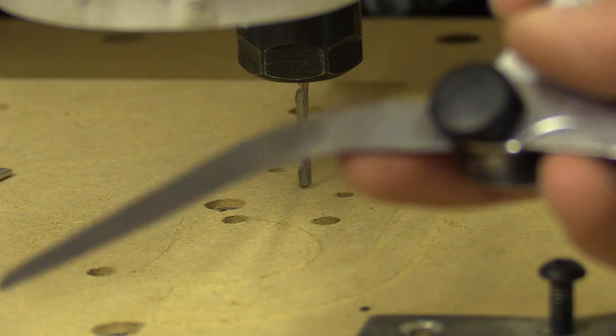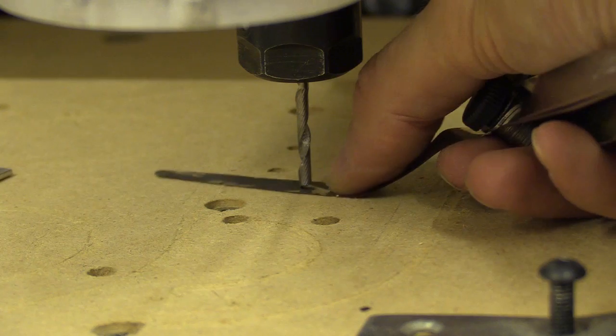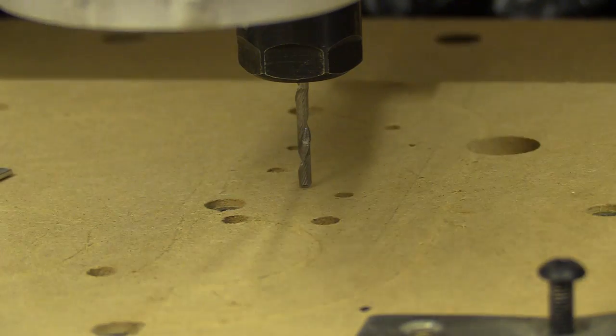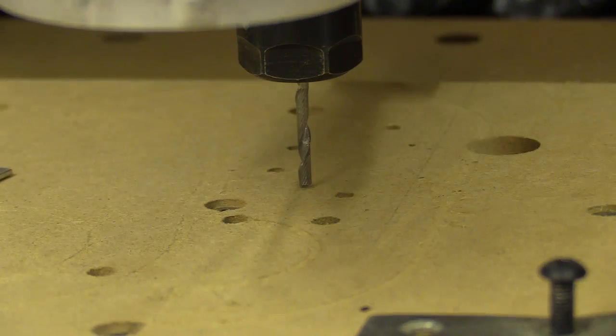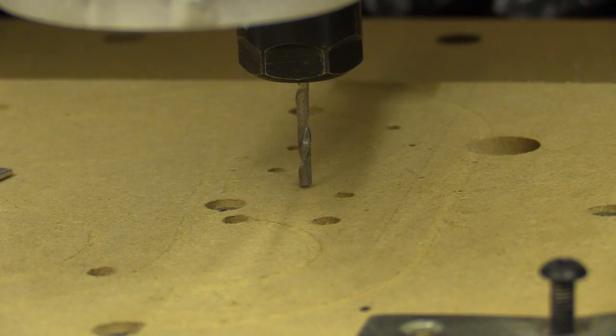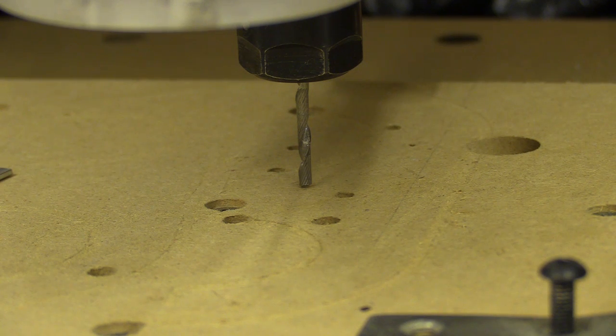Thinnest one, which is 0.01. So if I write G92Z0.1 now, it should move down a little bit further.